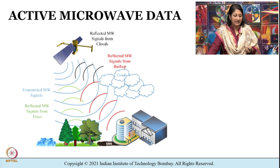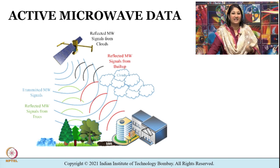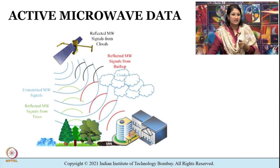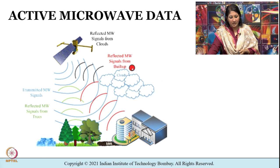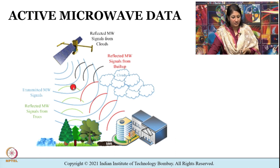Shown here is a diagram that explains active microwave remote sensing and how data is collected. In active remote sensing, characteristics of the ground surface are mainly derived from what is known as the backscattered values. You can see the reflected microwave signals from the built-up area, from the clouds, and the transmitted signals shown in blue from the instrument.